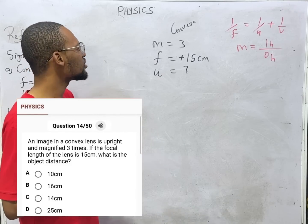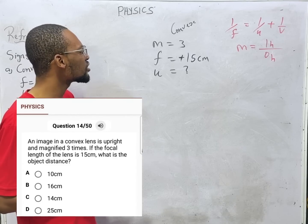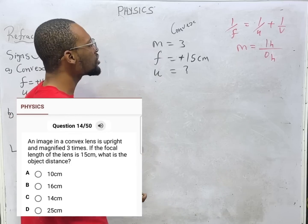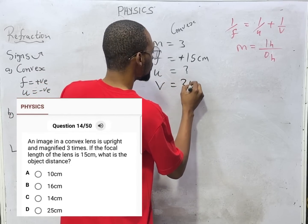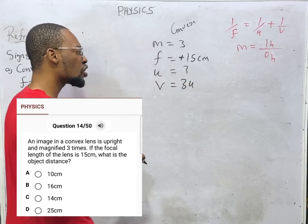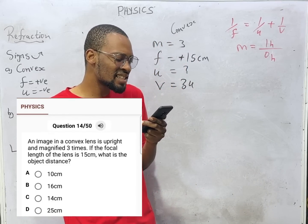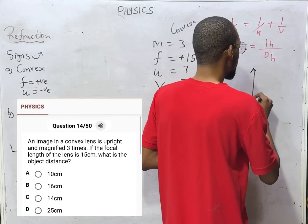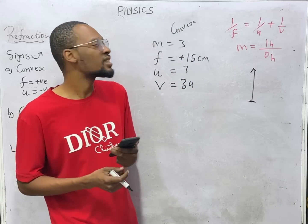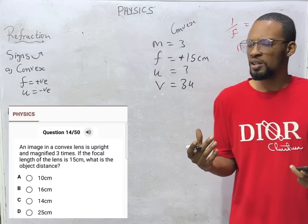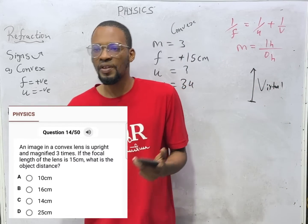Magnification is three. It means V equals three U. The image formed is three times the object. It says that the image is from a convex lens and it is upright. The only image that is upright in convex lens is virtual.